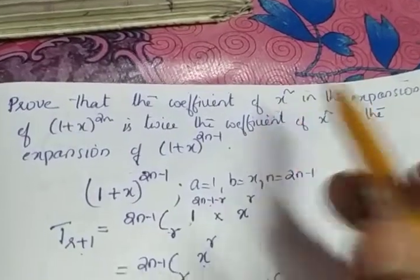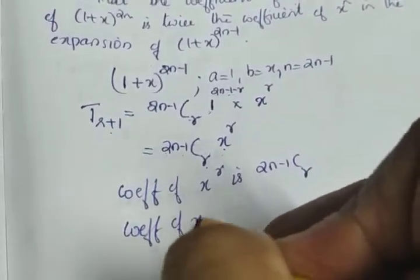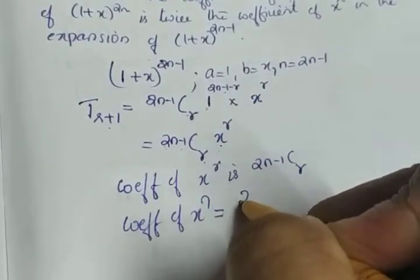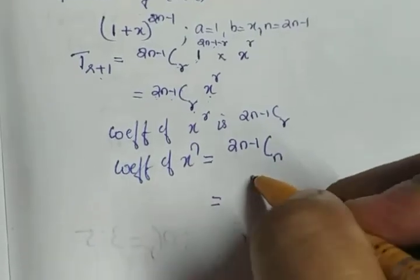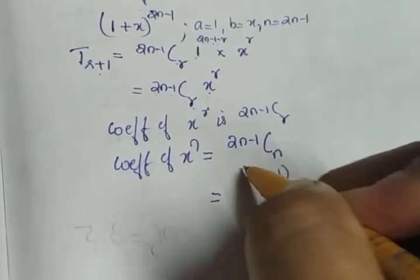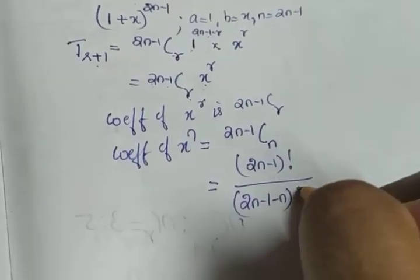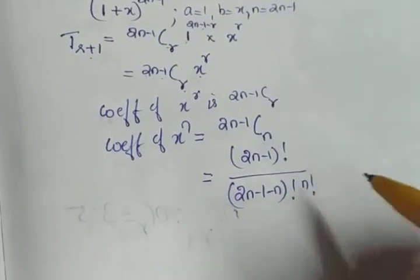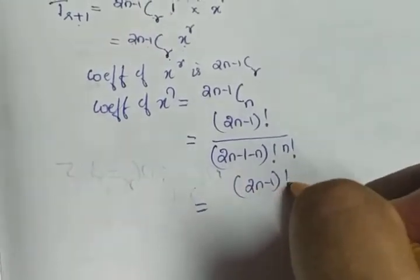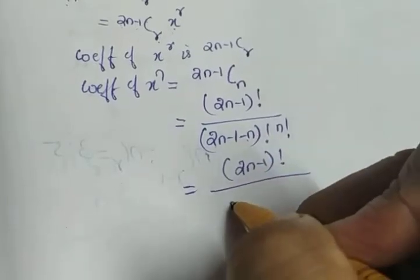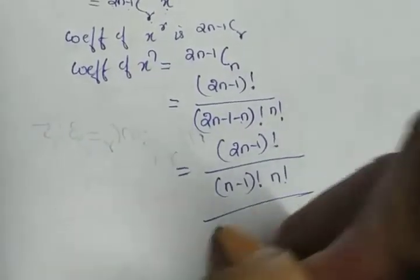We need the coefficient of x raised to n, so we calculate C(2n-1, n). Applying the formula, this equals (2n-1)! divided by (2n-1-n)! times n!, which simplifies to (2n-1)! divided by (n-1)! times n!.